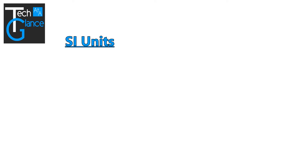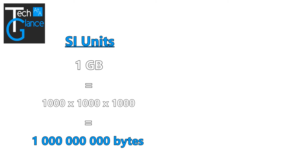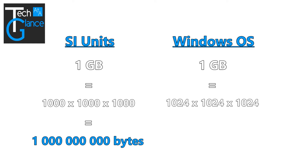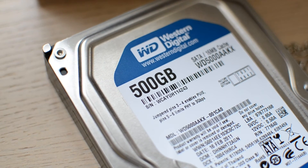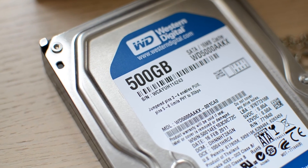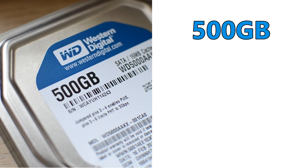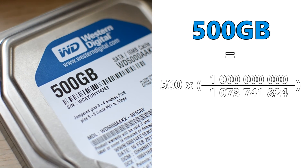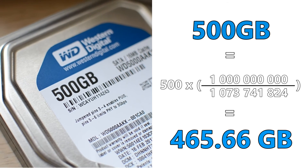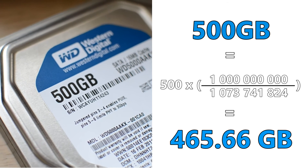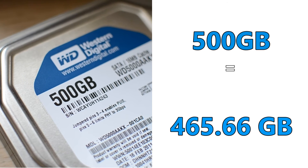Normally in SI units, 1GB would equal 1 billion bytes. In Windows, 1GB is defined as just over 1 billion bytes. So when Windows sees 500GB — or 500 billion bytes — from your new hard drive, it'll do a calculation which gets about 465GB of storage space instead of the expected 500GB.